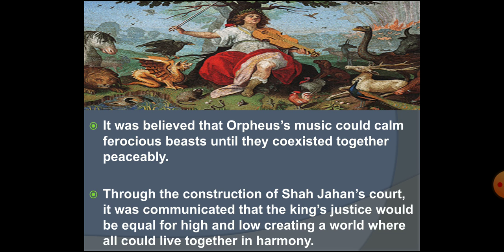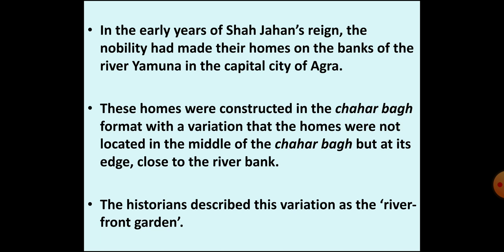When Shah Jahan ascended the throne, he initially had his capital in Agra. The nobility had built their residences on the banks of the river Yamuna. These residences were built in the midst of formal gardens constructed in the Charbagh style. At the same time, there was a variation: the residence was not located in the midst of the garden but at its edge, close to the bank of the river. Historians describe this variation as the riverfront garden.